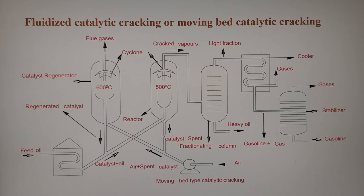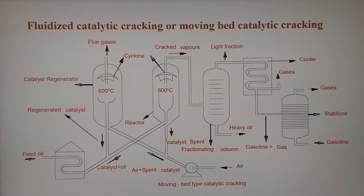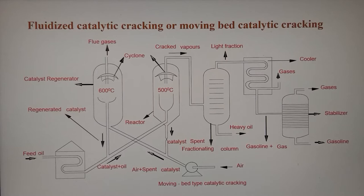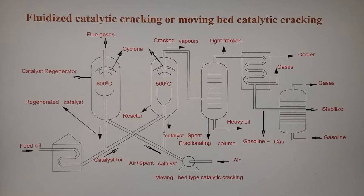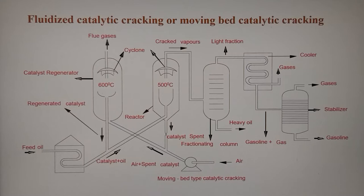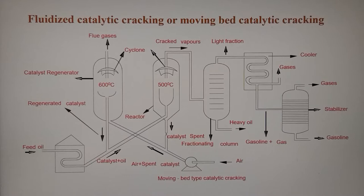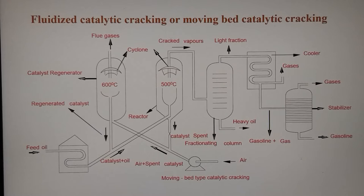The stabilized liquid obtained has an almost uniform composition — this is the gasoline or petrol. During this process the catalyst gets exhausted because of the deposition of carbon particles on its surface, and it must be reactivated. To do this, the catalyst is taken out from the bottom pipe and forced into the regenerator tower using a blast of air.